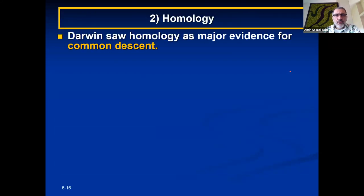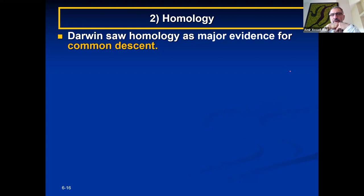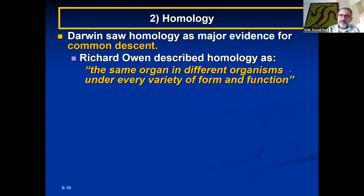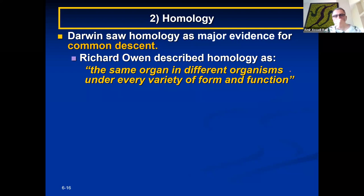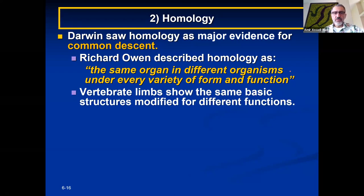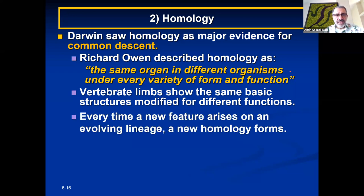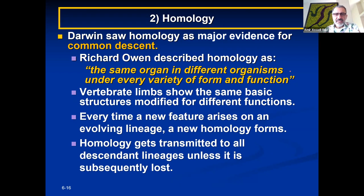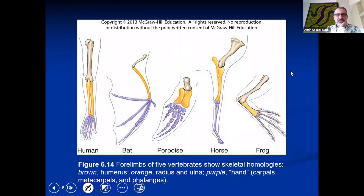The next evidence is homology. Darwin made his observations based on homology — similarity between two species. Darwin saw homology as major evidence for a common descendant. Richard Owen described homology as 'the same organ in different organisms under every variety of form and function.' The vertebrate limb shows the same basic structures modified for different functions. Every time a new feature rises on an evolutionary lineage, a new homology forms, and it gets transmitted to all descendant lineages unless subsequently lost.